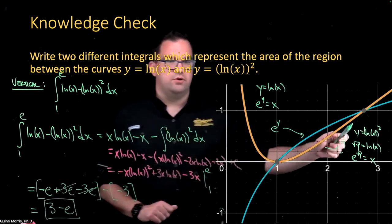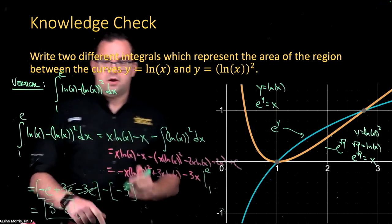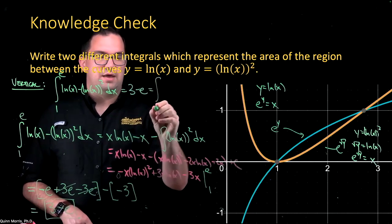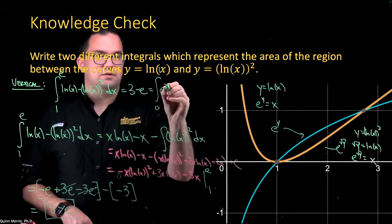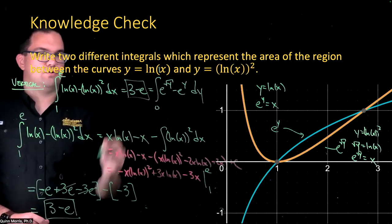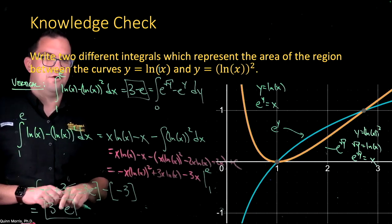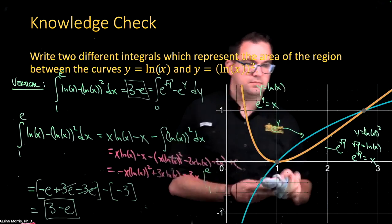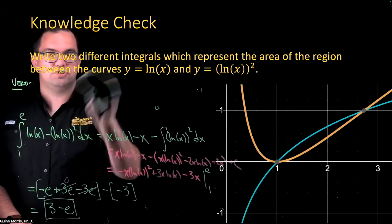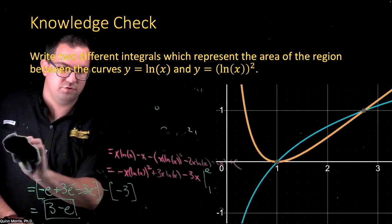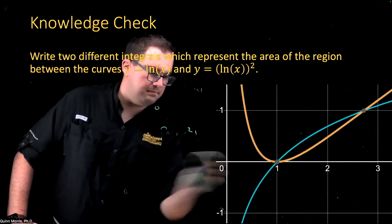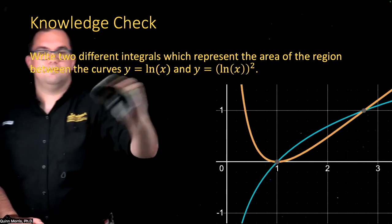Because we know the vertical integral equals 3 minus e, the horizontal integral from 0 to 1 of (e to the square root y minus e to the y) dy must also equal 3 minus e, since both represent the same area. This is actually a powerful idea for integrating functions that look impossible to handle directly.